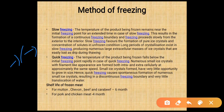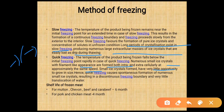Slow freezing favors the formation of pure ice crystals and concentration of solutes in unfrozen conditions. A long period of crystallization exists in slow freezing, producing numerous large extracellular masses of ice crystals that are easily lost as drip during thawing. In quick freezing, the temperature falls below the initial freezing point rapidly. Numerous ice crystals with filament-like appearances are formed both intra- and extracellularly at approximately the same speed, forming small ice crystals with discontinuous freezing boundaries and very little water translocation.